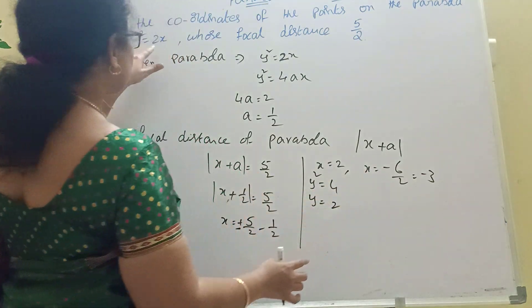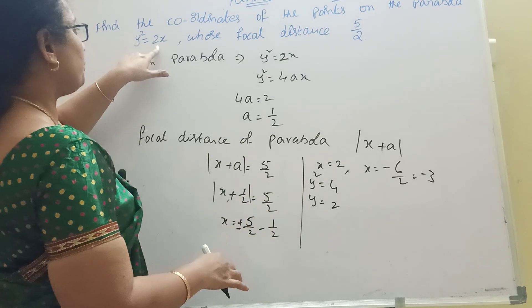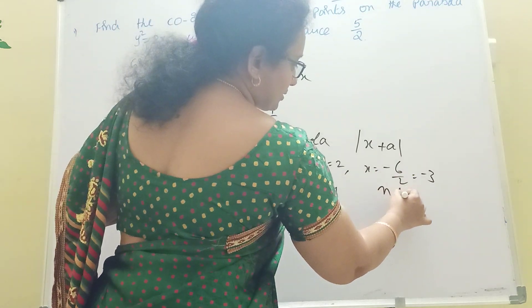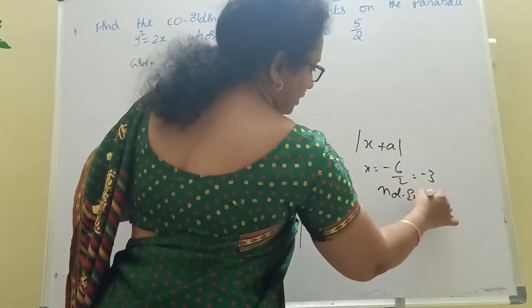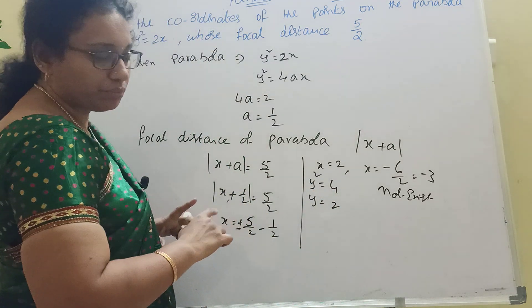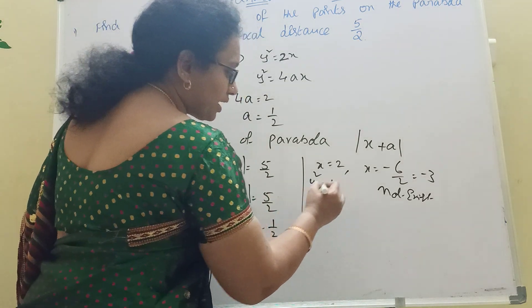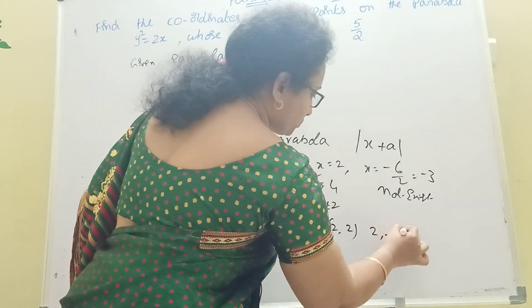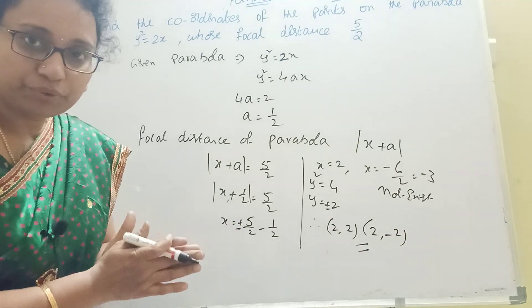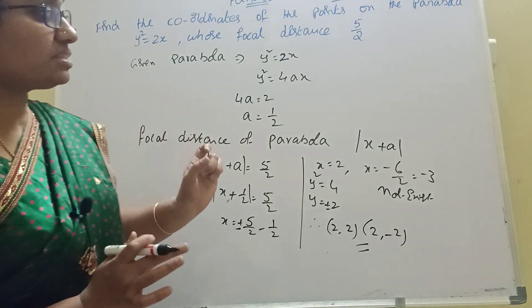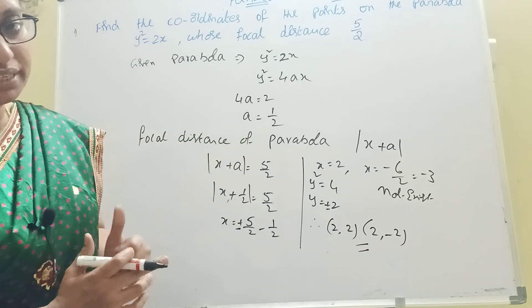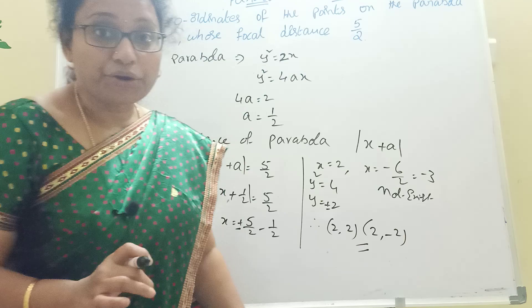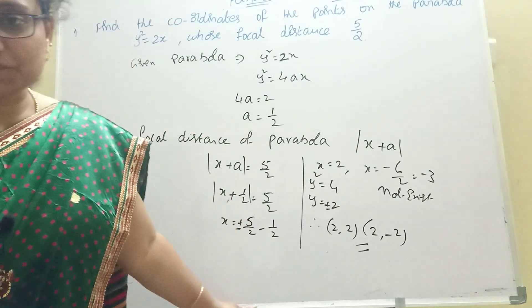Note that x = −3 does not exist — a negative value under the root does not exist. So that value is discarded. The root of 4 gives ±2, so y = +2 and y = −2. Therefore the points of the parabola are (2, 2) and (2, −2). This is the formula of focal distance of the parabola: modulus of (x + a).